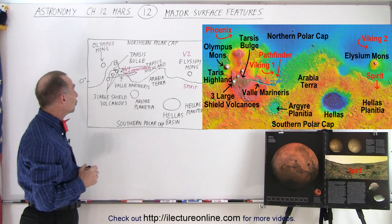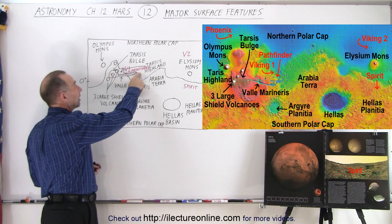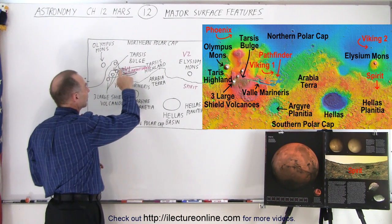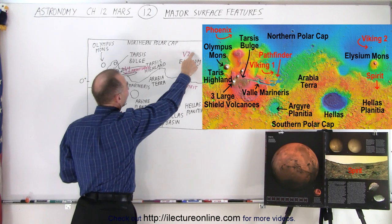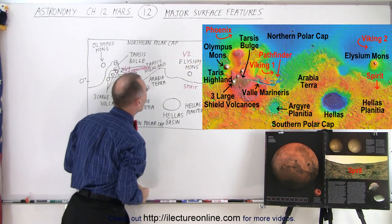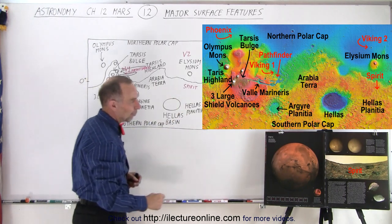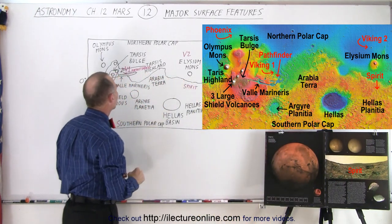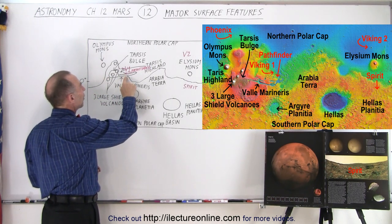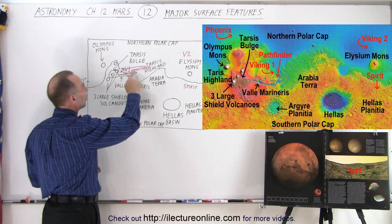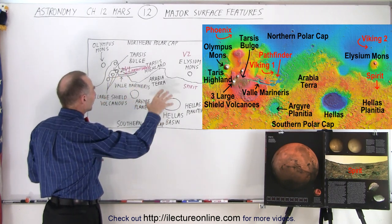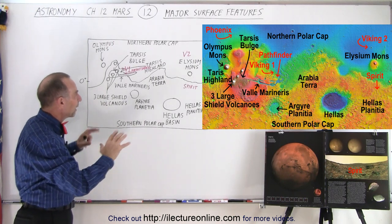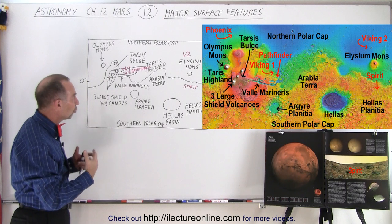Another thing of note, notice that we marked some of the satellites that landed on the planet. We have Viking 1 that landed very close to the three volcanoes here near the Tarsus Bulge. We have Viking 2, which landed in the lowlands here above Elysium Mons. We have Spirit. Matter of fact, we have a picture here that was taken by the rover Spirit. And that rover landed here near the Hellas Planitia. And then we have another one that landed not too far away from Valles Marineris, also near the Tarsus Highland called the Pathfinder. So you can see that they've taken rovers and landers that land in different locations on the planet. They get kind of a view, kind of a feel of what the planet is like in different locations.